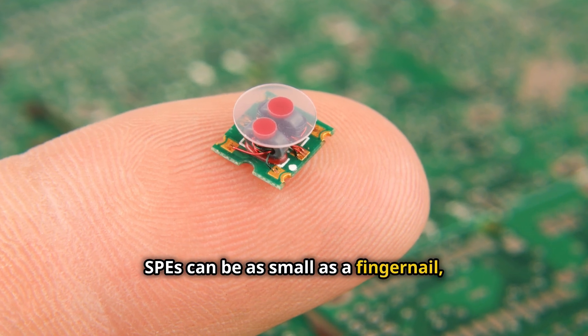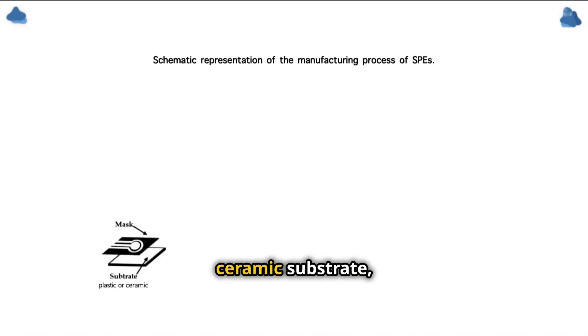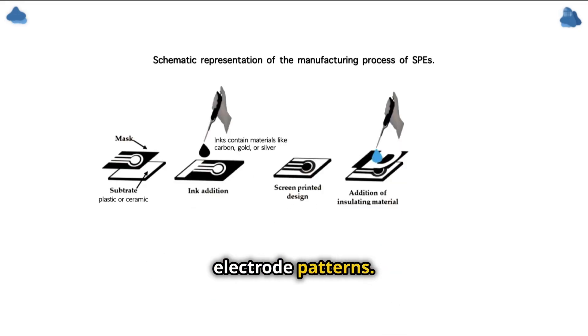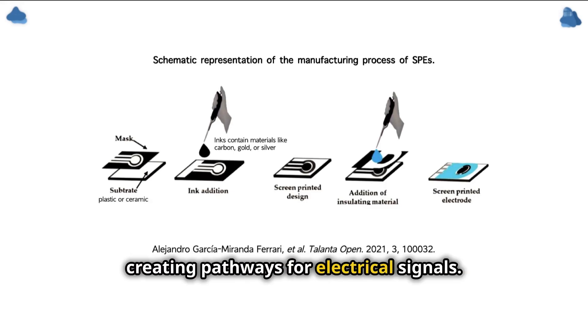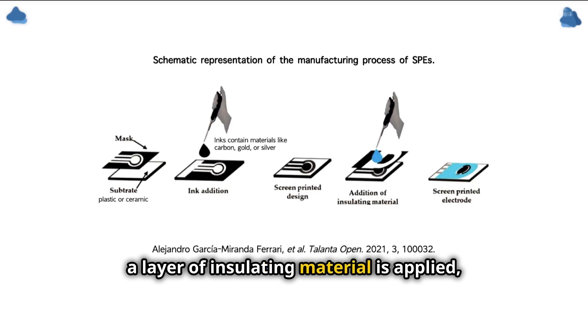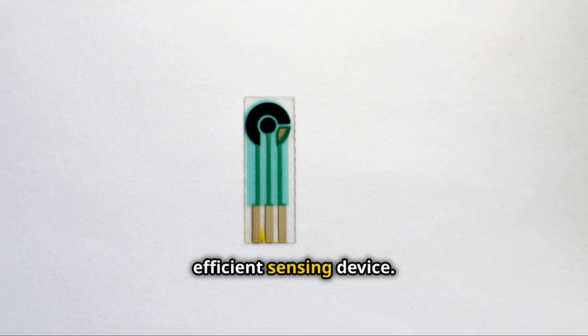SPEs can be as small as a fingernail, yet pack the punch of much larger analytical instruments. The base is typically a plastic or ceramic substrate, with conductive inks forming the electrode patterns. These inks contain materials like carbon, gold or silver, creating pathways for electrical signals. Finally, a layer of insulating material is applied, leaving only the active areas exposed. The result is a compact, efficient sensing device.